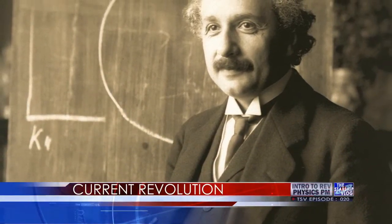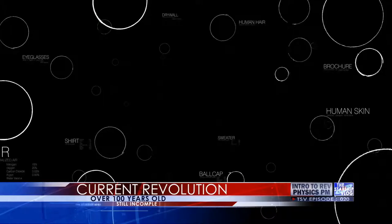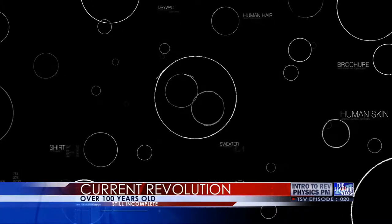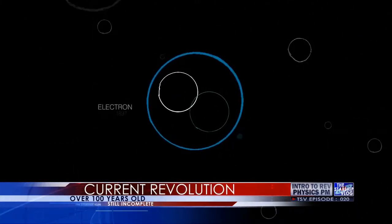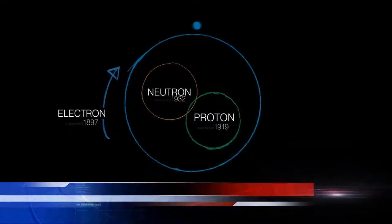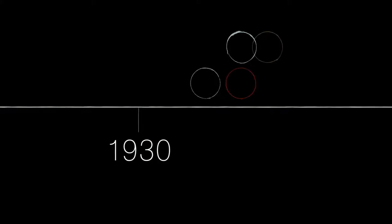Since Einstein began the modern physics revolution, theoreticians, including Einstein himself, have been struggling to explain reality in terms that do more than calculate accurate predictions of experimental measurements. They seek greater understanding of the universe and our place in it.